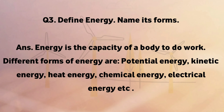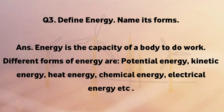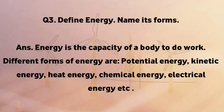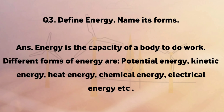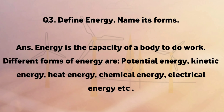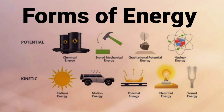Define energy and name its forms. Energy is the capacity of a body to do work. Different forms of energy are potential energy, kinetic energy, heat energy, chemical energy, electrical energy, etc.